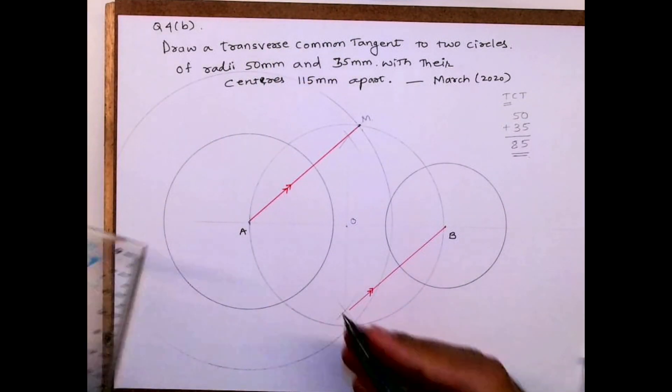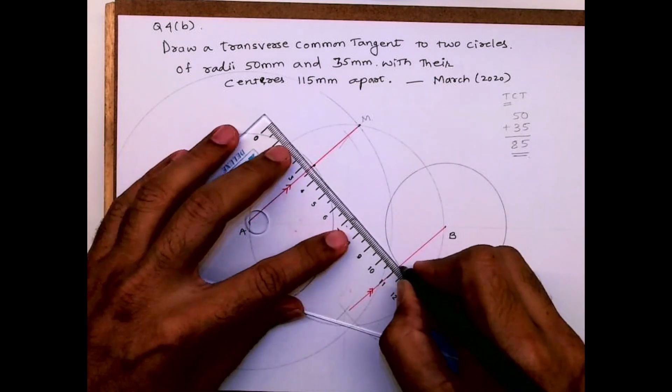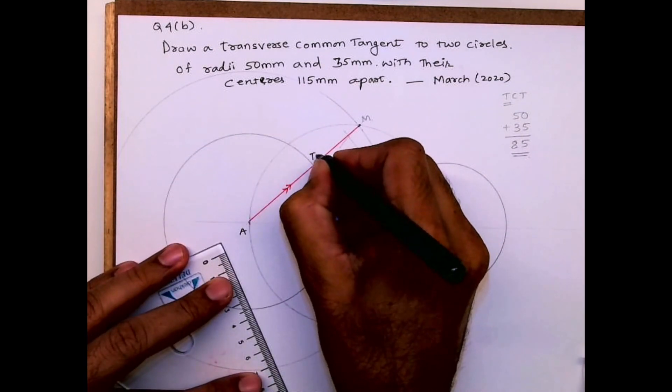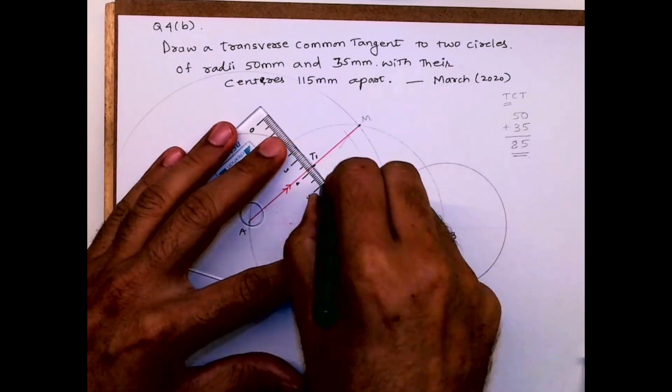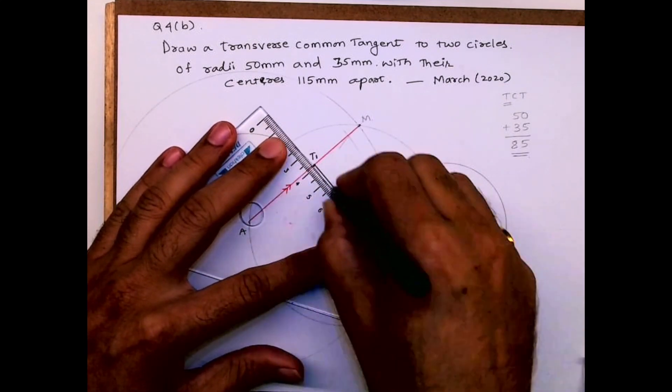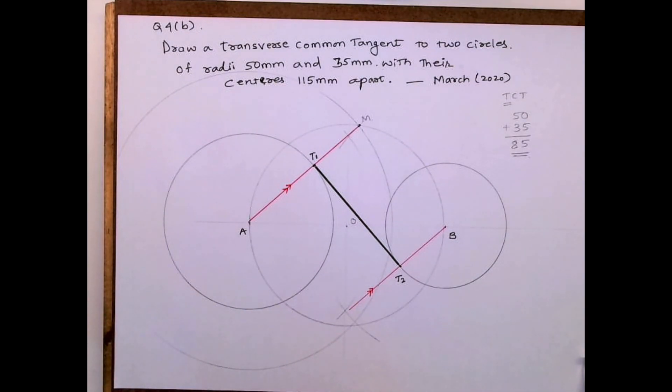After that, this is point T1, this is point T2. Join T1, T2. So you'll get tangent. So this is transverse common tangent.